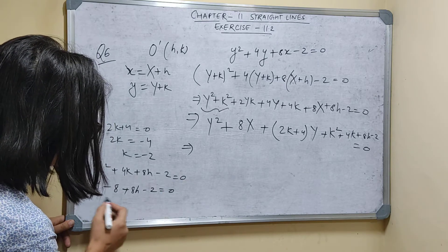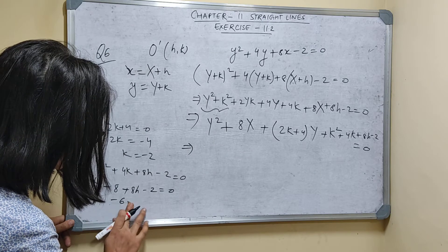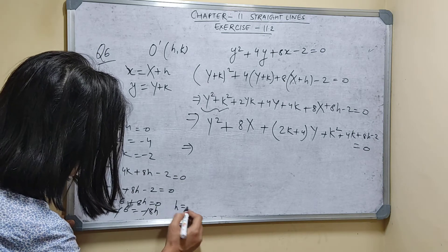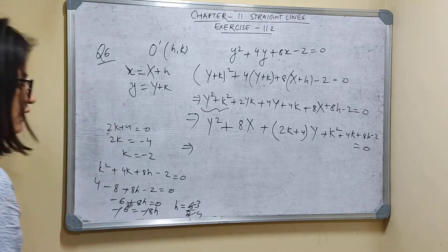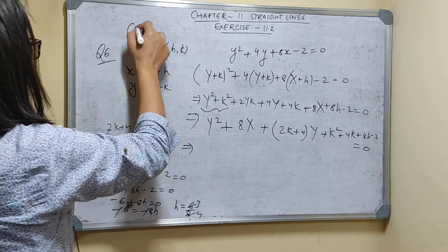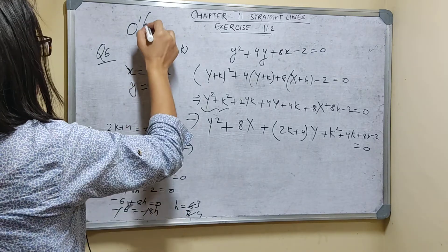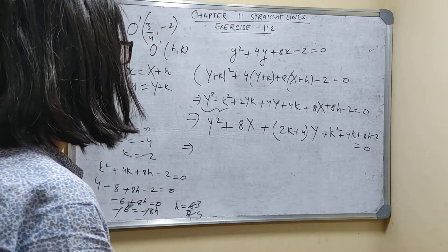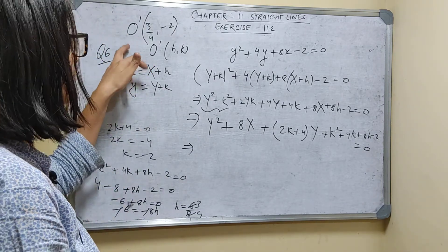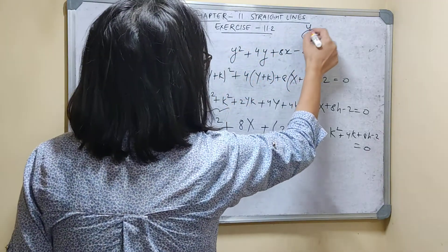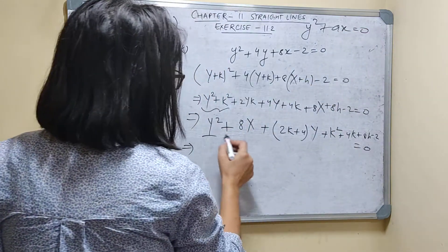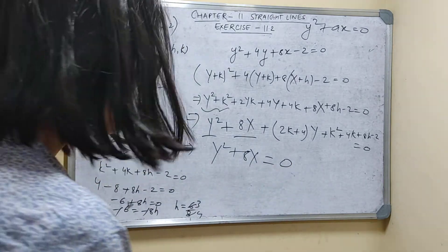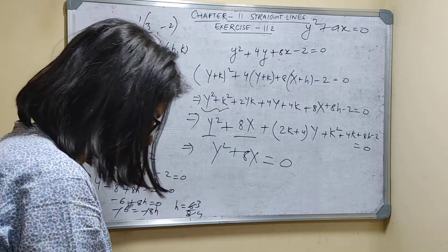So -6 + 8H = 0, giving H = 6/8 = 3/4. Therefore the new origin is O' = (3/4, -2). When you shift to this origin, the equation is reduced to the form Y² + 8X = 0. Thank you.